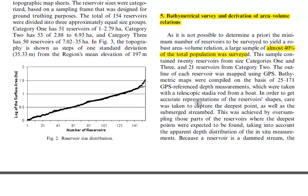The most important part of the article is the bathymetrical survey and derivation of area-volume relations. While remote sensing can reveal surface areas, you also want to know the volume — how many cubic meters are stored. Because there was a wide variety in reservoir shapes, a large percentage of the total population was visited: nearly 40%, or 60 reservoirs, each receiving a detailed bathymetric survey.